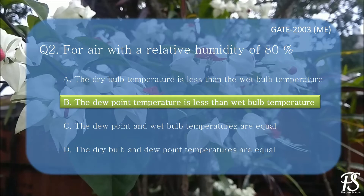In the given question, the relative humidity is 80%, which means the air is unsaturated. For unsaturated air, the dew point, wet bulb, and dry bulb temperatures are not the same. In such cases, the dry bulb temperature is greater than the wet bulb temperature, which is again greater than the dew point temperature. In case of saturated air, the three temperatures — dry bulb, wet bulb, and dew point — are the same. Hence, in this question, only option B is correct.